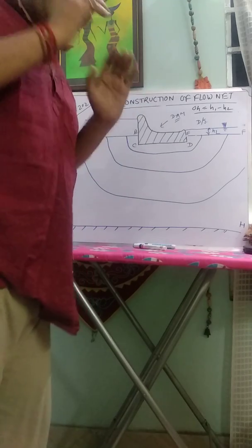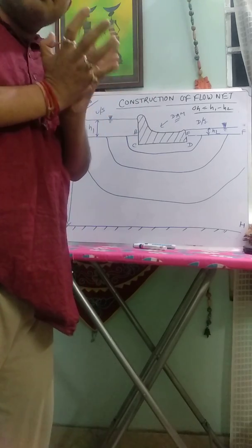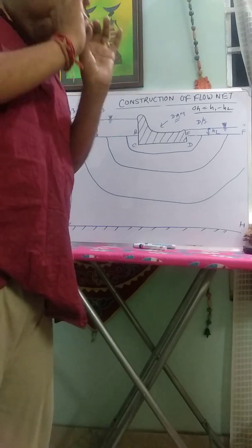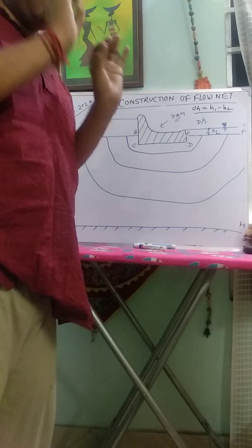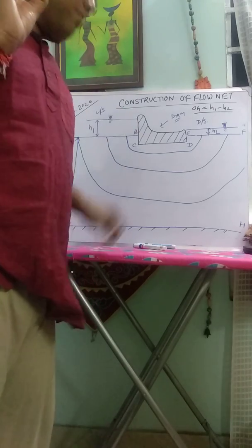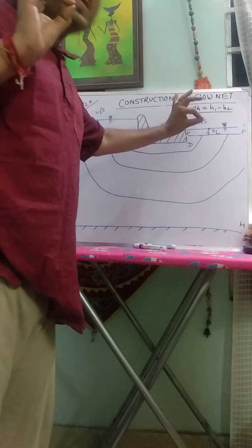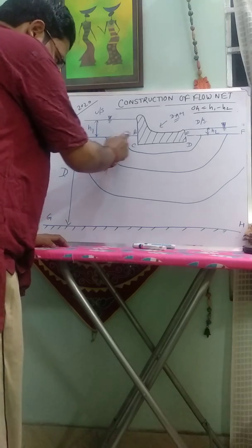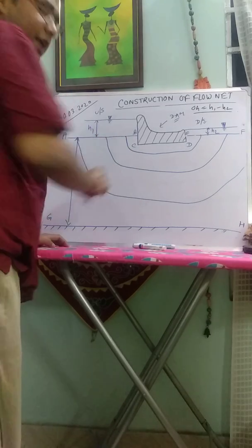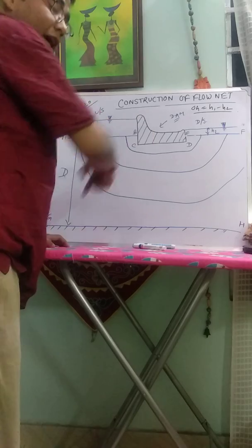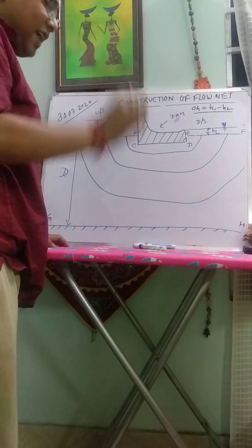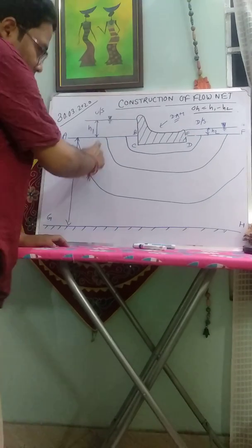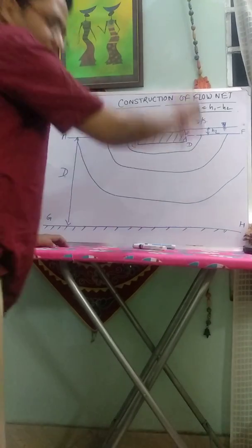These all lines are imaginary lines. That's why when you draw the flow net or flow lines or equipotential lines, try to draw near to straight line - the curve near to straight line. If we draw the flow line like this, it won't form a square, it will convert to rectangle. That's why with imagination, you draw the first flow line, and this is another flow line, and this is another flow line.